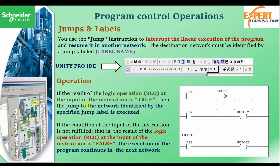If the result of the logic operation at the input of the jump instruction is true, then the jump to the network identified by the specific label is executed. If the condition is false and the result is not fulfilled, then the program will execute normally and follow the normal linear program execution.